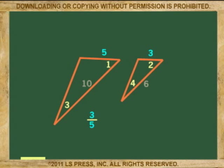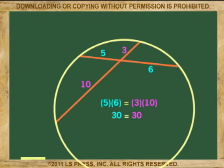Notice that once the triangles are properly referenced, then 3 is to 5 as 6 is to 10. And cross multiplying, 3 times 10 is 30, and 5 times 6 is also 30. It checks. If you multiply the parts of the intersected chords, the products are equal.